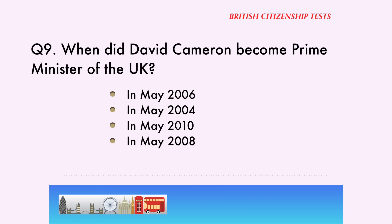Question 9. When did David Cameron become Prime Minister of the UK? In May 2006, in May 2004, in May 2010, in May 2008. The correct answer is... In May 2010.